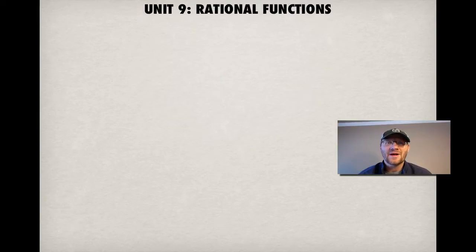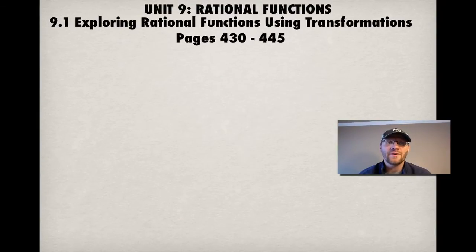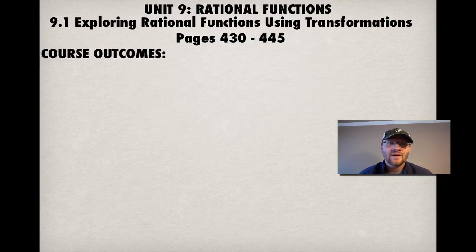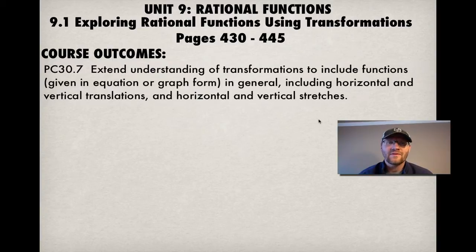Alright, we're talking about unit 9, which is rational functions today, and 9.1 is exploring rational functions using transformations. That's on pages 430 to 445 in your text. Our course outcomes, 30.7, is to extend understanding of transformations to include functions given in an equation or graph form in general, including horizontal and vertical translations and horizontal and vertical stretches, stuff that we've done before.